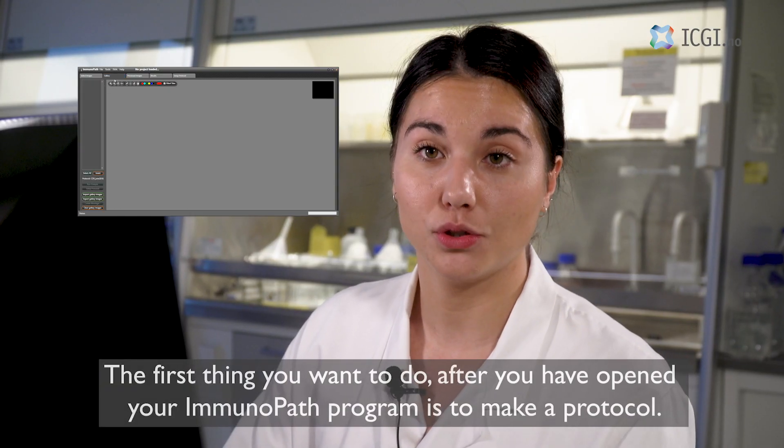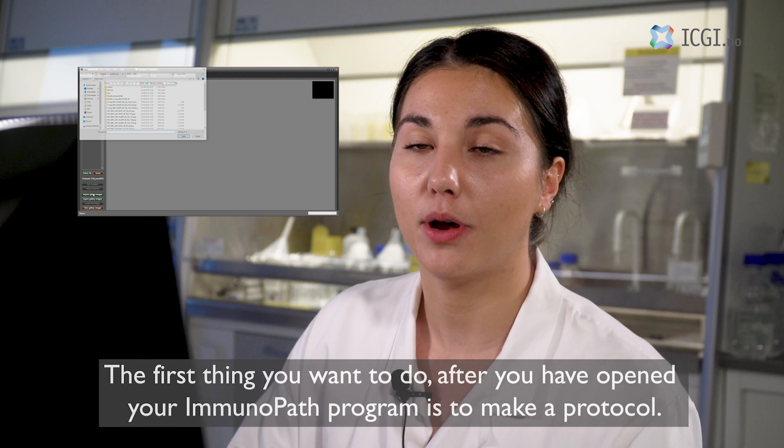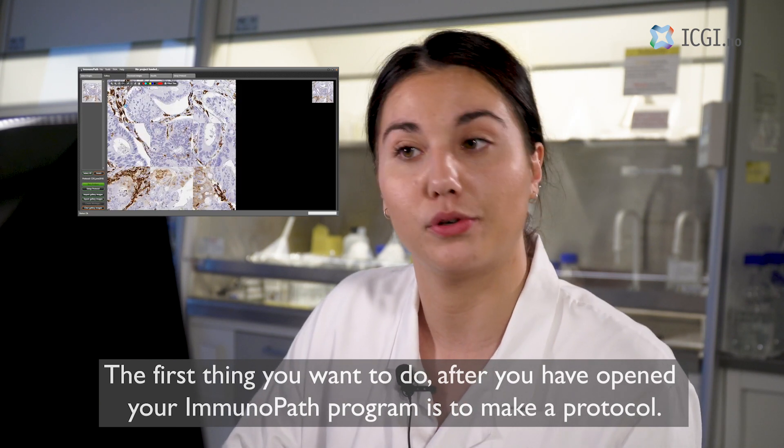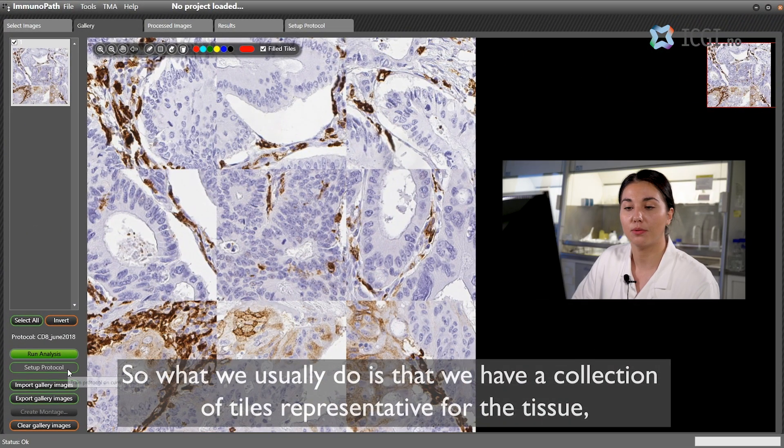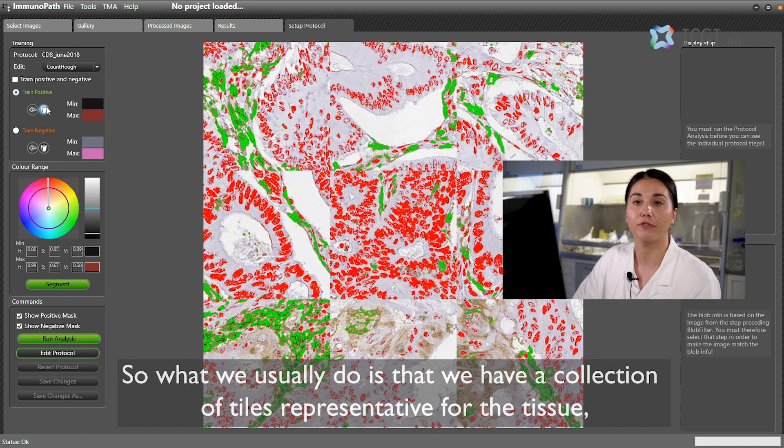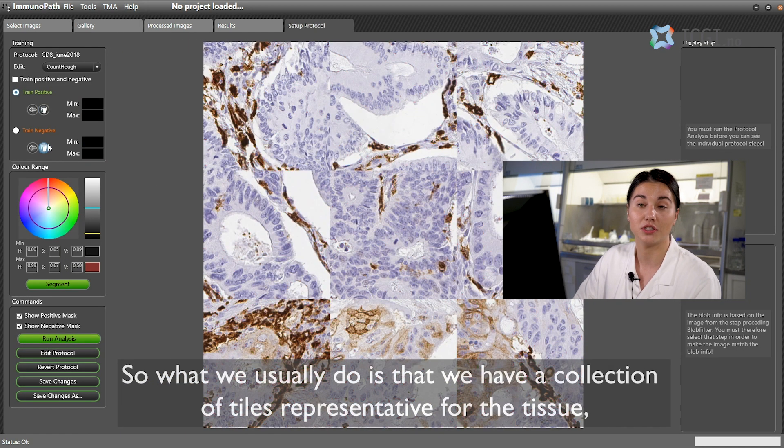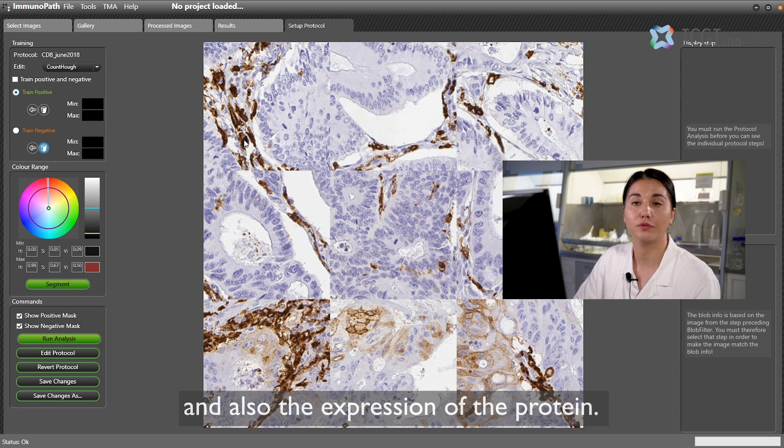The first thing you want to do after you have opened your ImmunoPath program is to make a protocol. So what we usually do is that we have a collection of tiles representative for the tissue and also the expression of the protein.